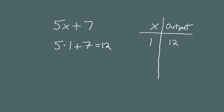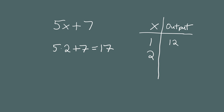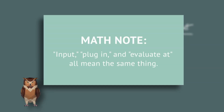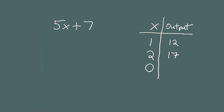Let's do another number — how about 2? When we replace x with 2 we get 5 times 2 plus 7, which equals 17. So when we input x equals 2 the output is 17. For our third example let's plug in the number 0. Another term you'll hear is 'evaluating' the expression. You can say let's plug in 0, or input 0, or evaluate this expression when x is 0 — these all mean the same thing. When we plug in 0 we get 5 times 0 plus 7, which equals 7.